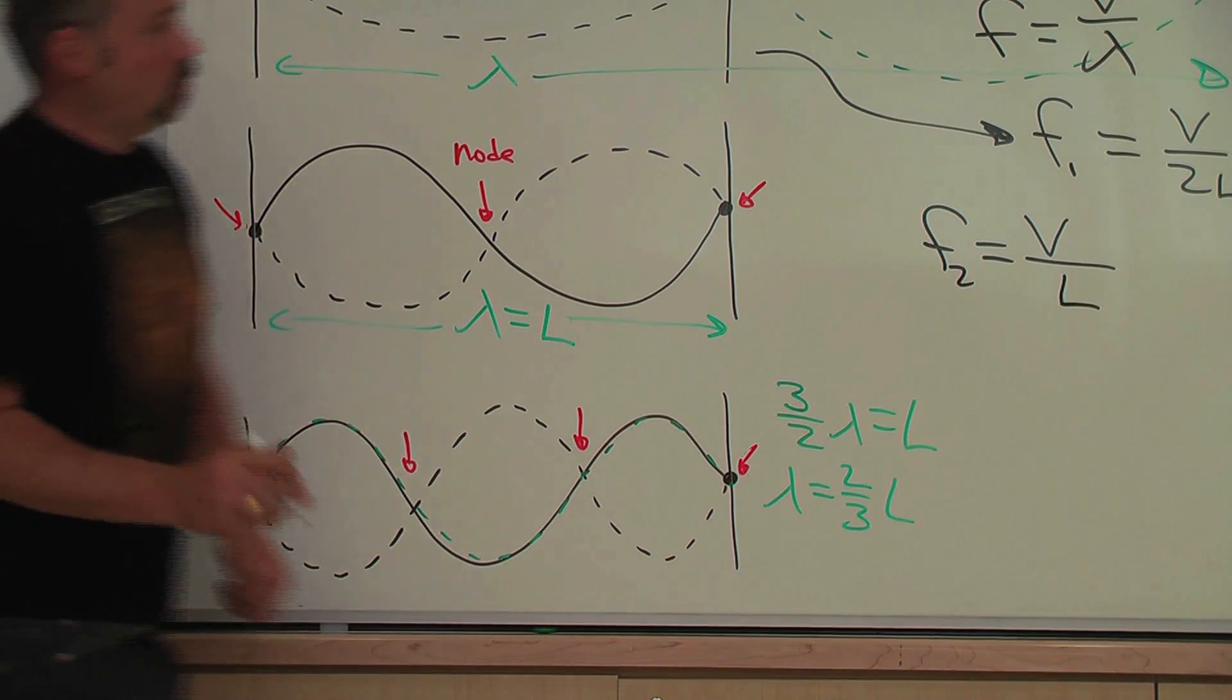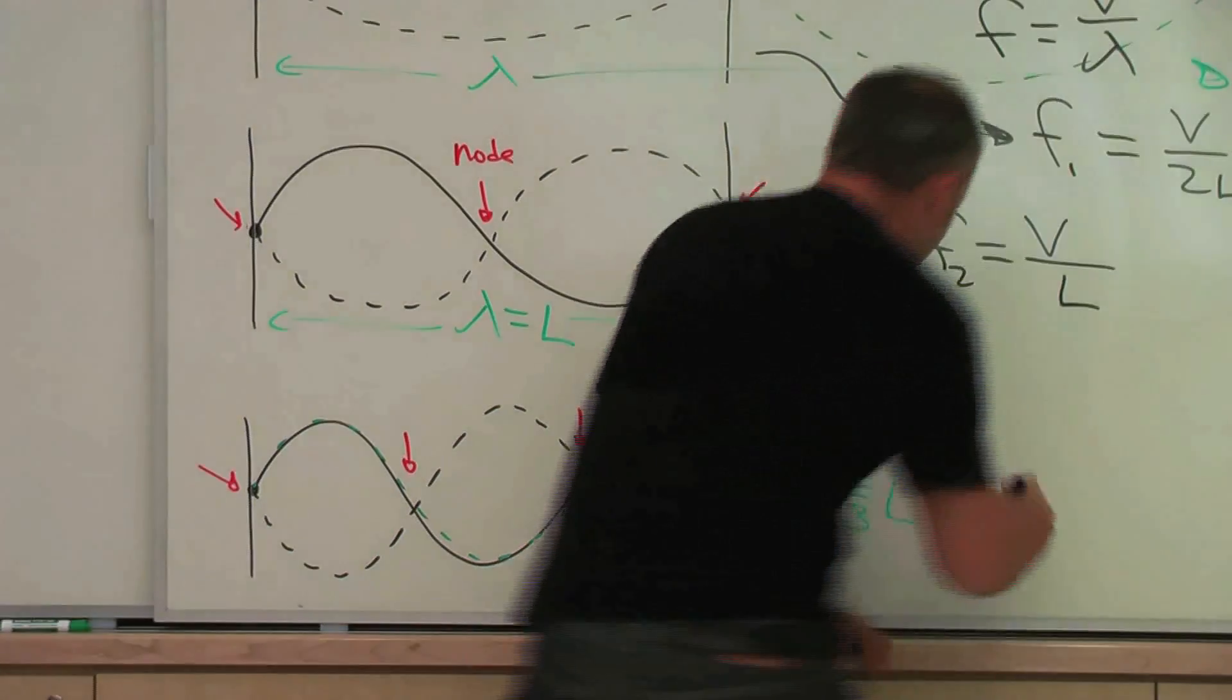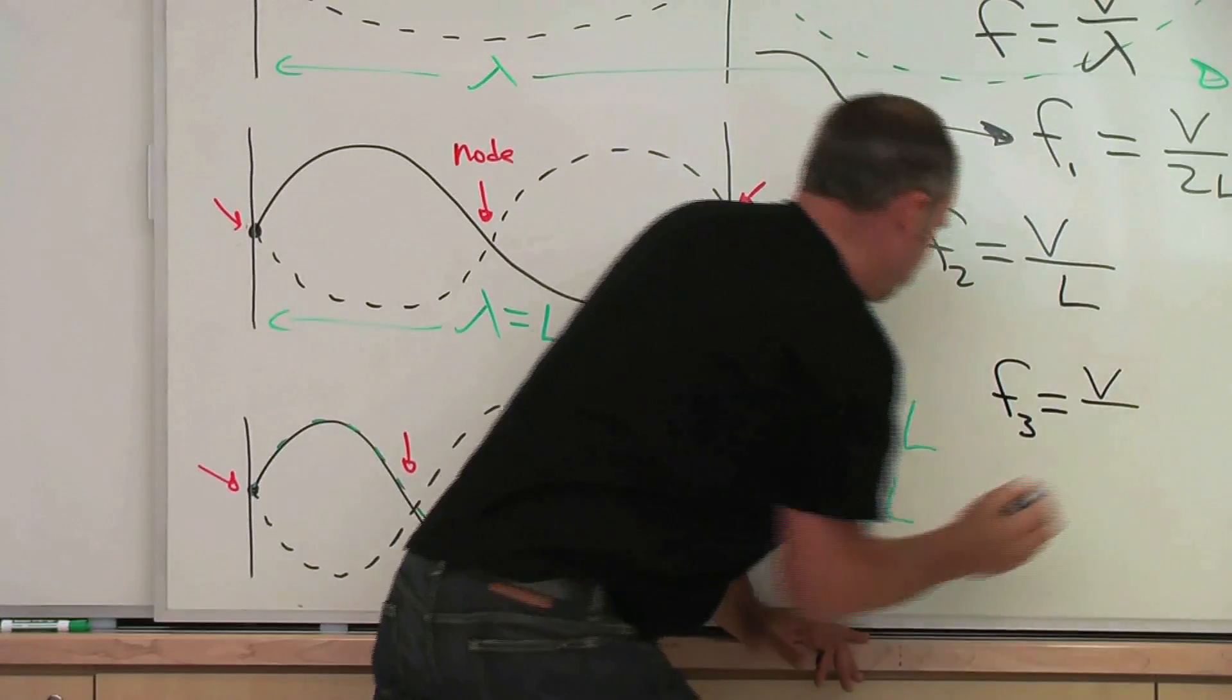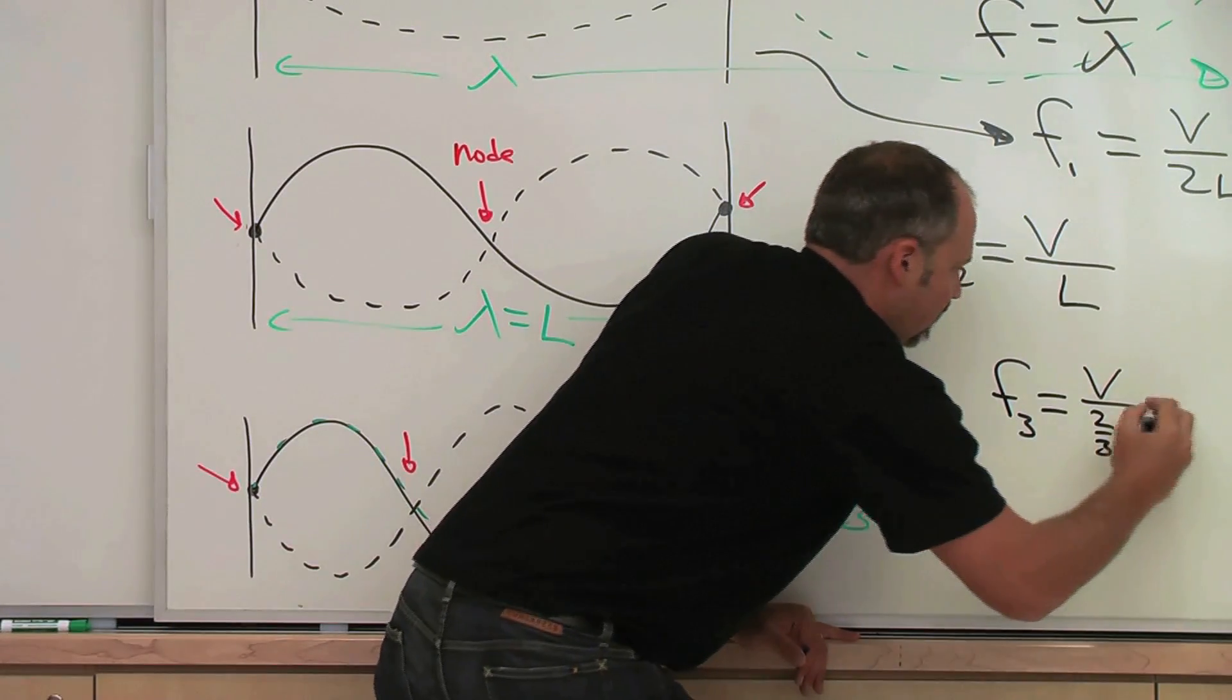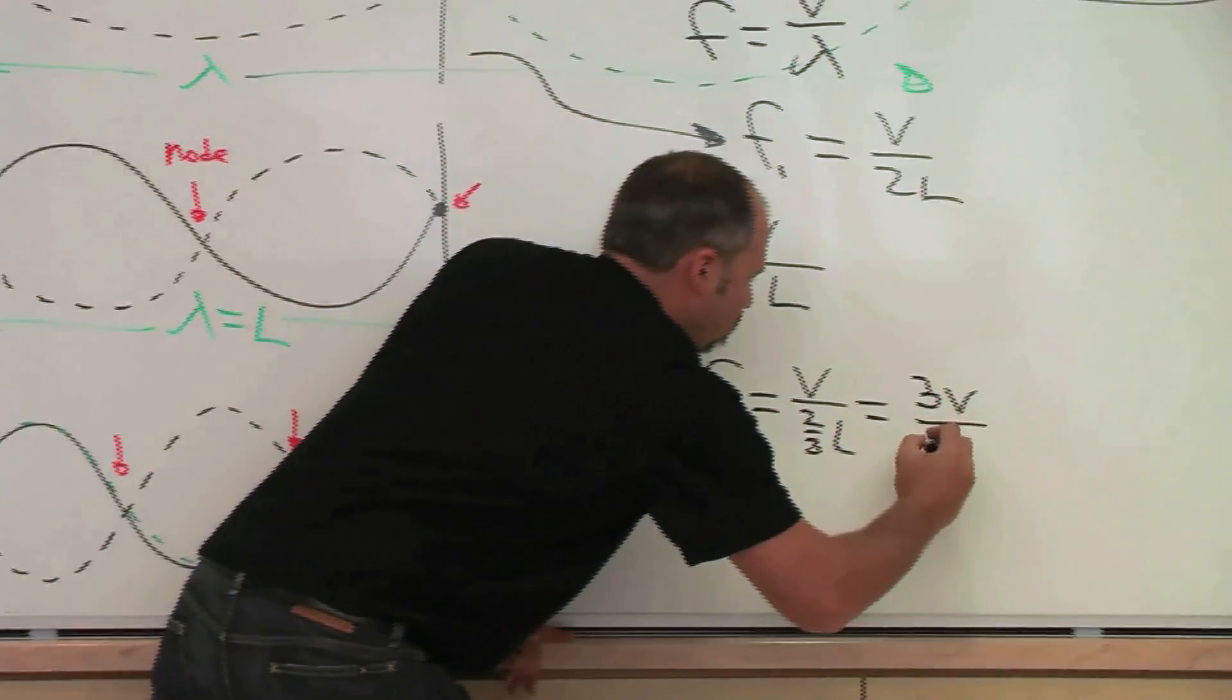So plugging in to the wave equation, frequency equals speed over wavelength, I have F3 is equal to V over two-thirds of L, and that equals 3V over 2L.